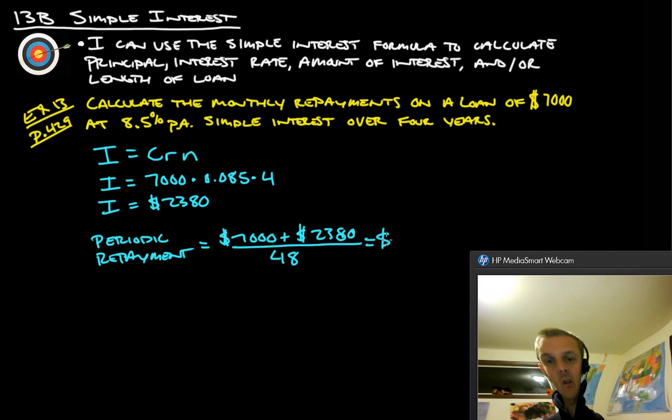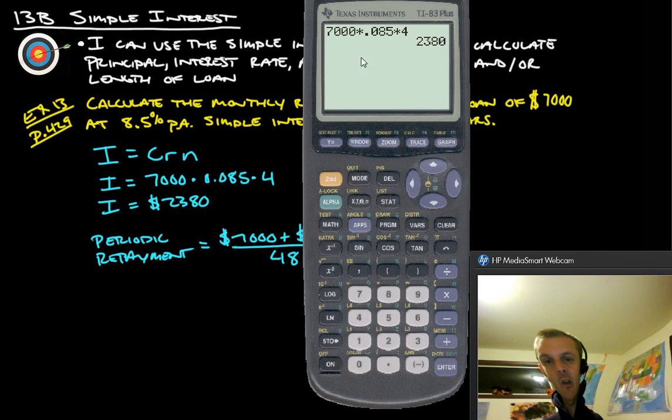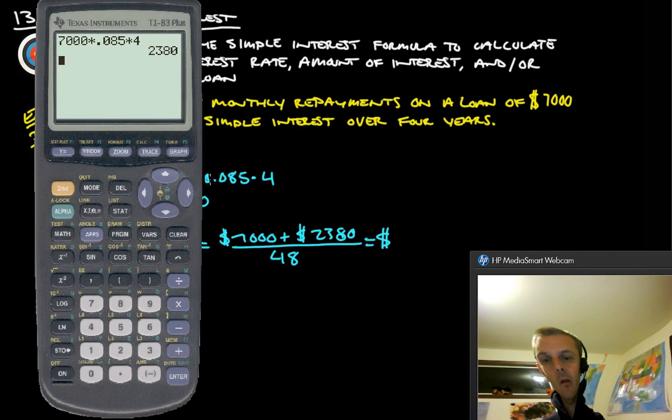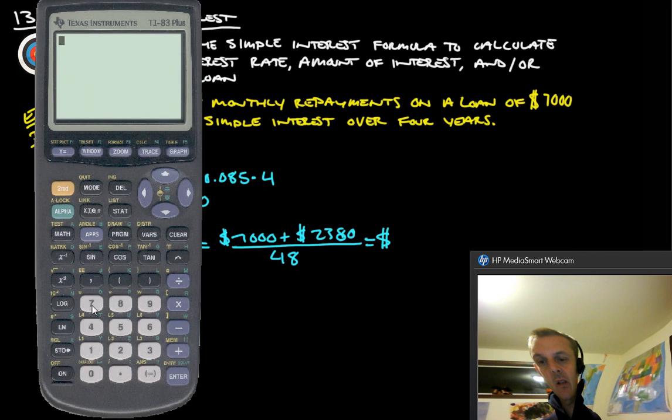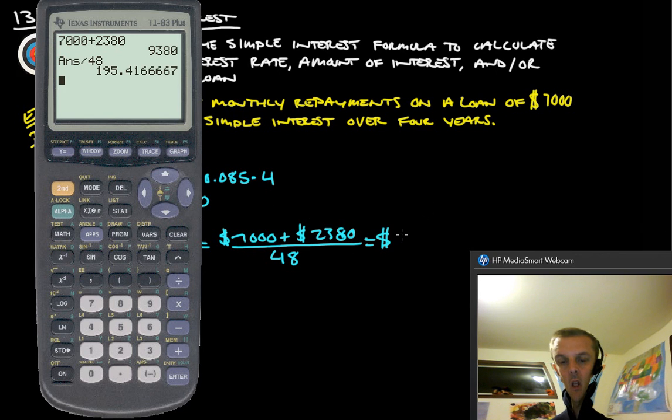Okay? And then this should give us our monthly repayments. Let's figure out what that is. So, let's take 7,000 plus 2380. And that gives us 9380. So, the 9380 is your total amount of money that you're gonna have to repay. And you have to repay that over 48 months. So, we divide that answer by 48 and we get 195.42. $195.42 per month. That's your periodic repayment.